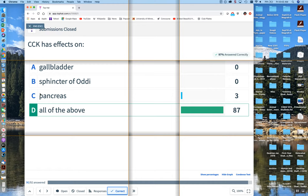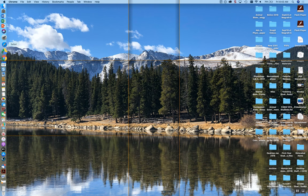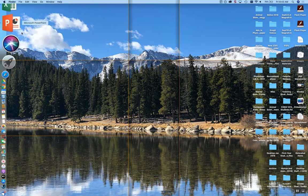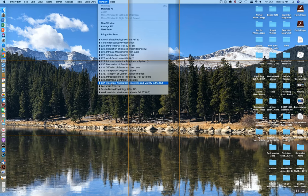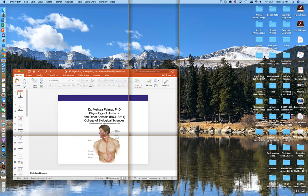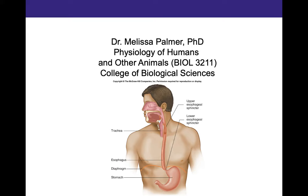That's it for the Top Hat questions. We're going to start with the lecture. We're going to be talking about the small intestines and the large intestines and the defecation response — digestion, absorption, and defecation. The main thing I'm going to be talking about today is motility — different types of motility in the small intestines and large intestines.